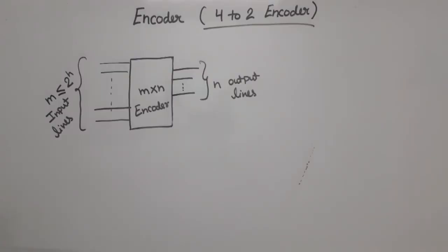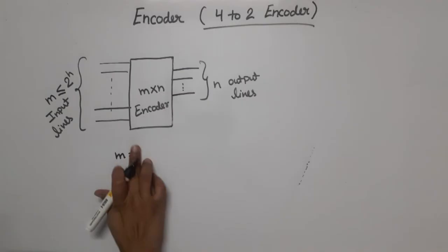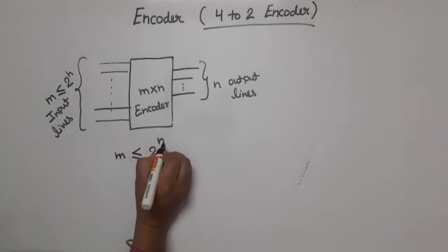Everyone, in this video I am going to discuss encoders. An encoder is a digital circuit which has m input lines and n output lines, where m ≤ 2^n. This means m can be less than or equal to 2^n, where n is the number of output lines.